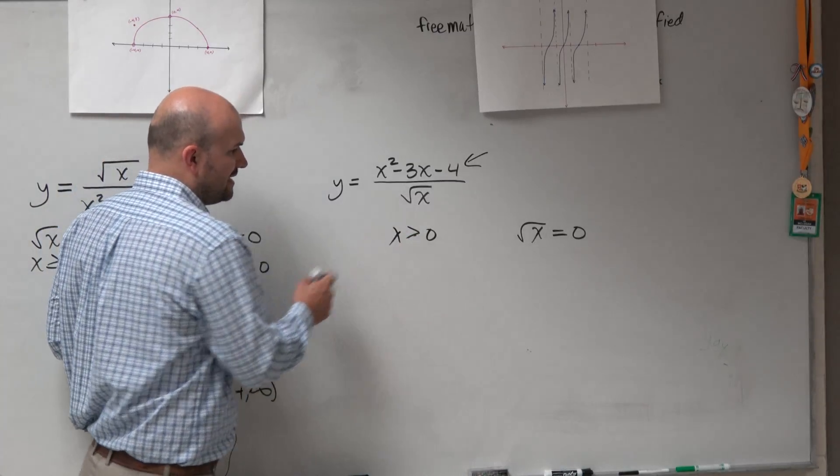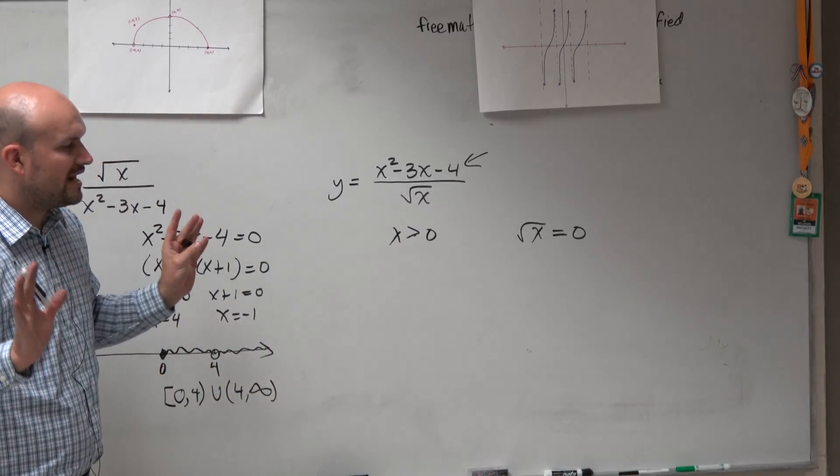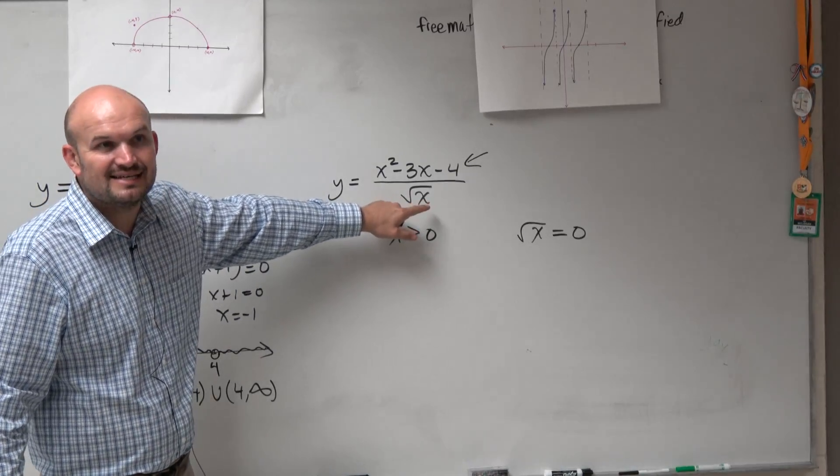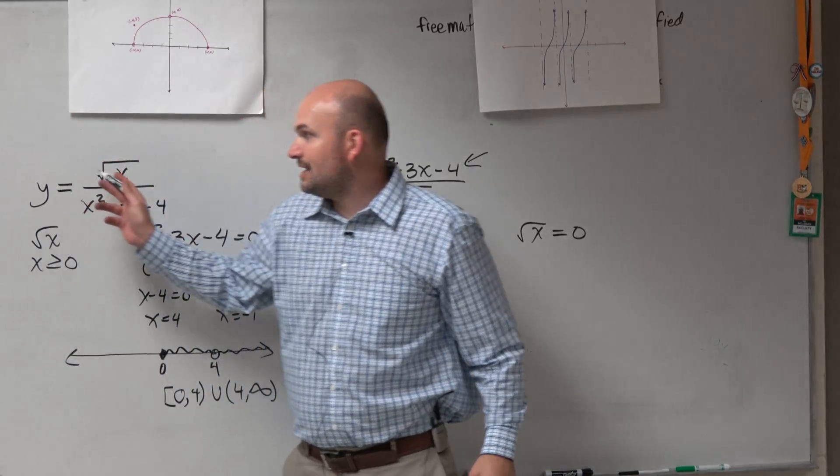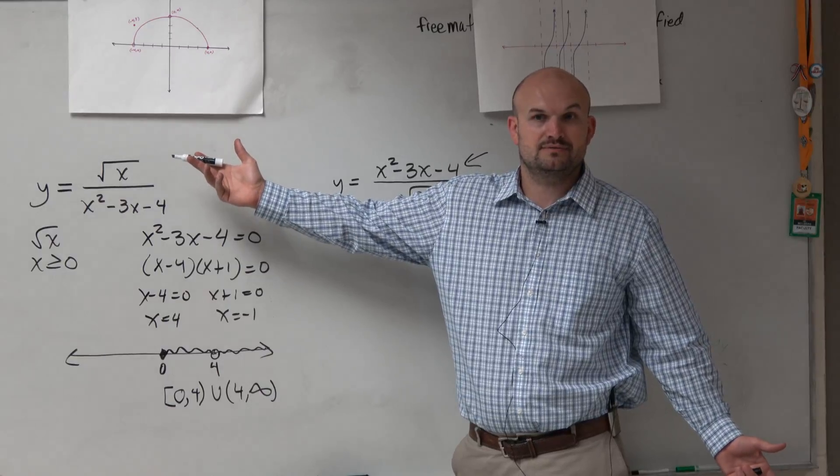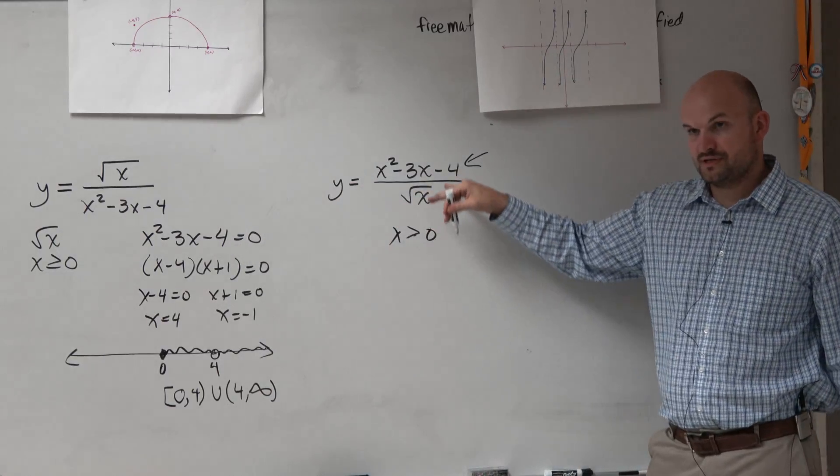So if we take this away, we just say, we just want the radical to be greater than 0. Not equal to 0, because in this case, it's in the denominator. Over there, over here, it's fine to be equal to 0. But here, we don't want it to be equal to 0, because it's in the denominator.